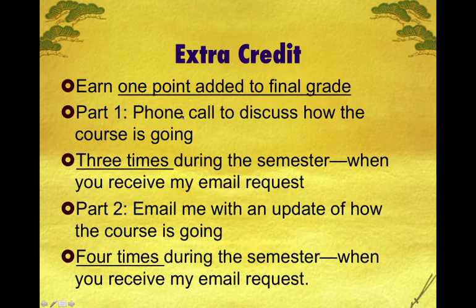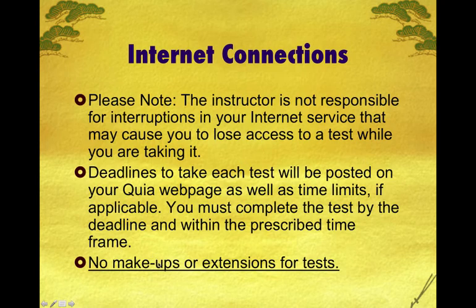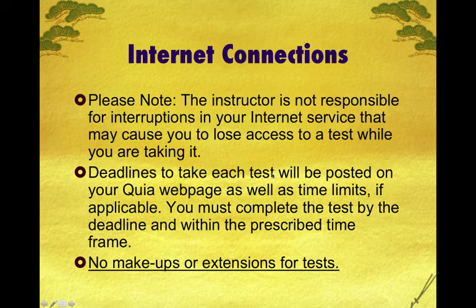You can get one point of extra credit added to your final grade. One point may not seem like a lot, but if you have a 79, it will make the difference between a C and a B. To earn it, you'll need to make a phone call to discuss how the course is going three times during the semester, and email me an update four times during the semester — I'll prompt you each time. When taking a test on KIA, make sure your internet connection is secure, because if it's interrupted, your answers may not post and your grade could be lower than you earned. Complete all tests within the prescribed deadline, as makeups or extensions for tests are generally not given.